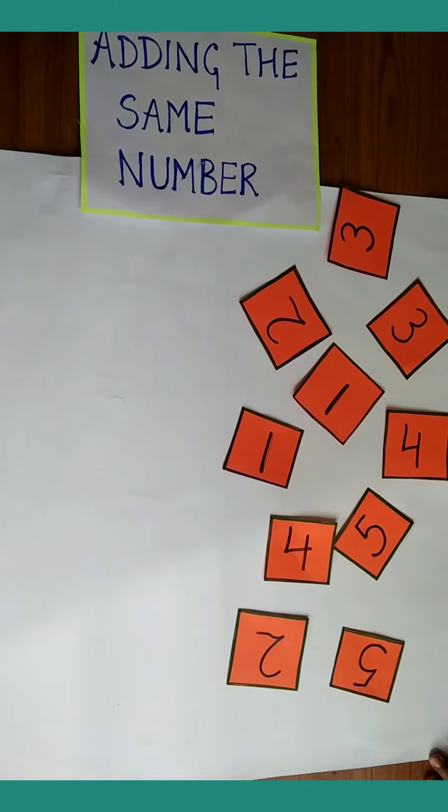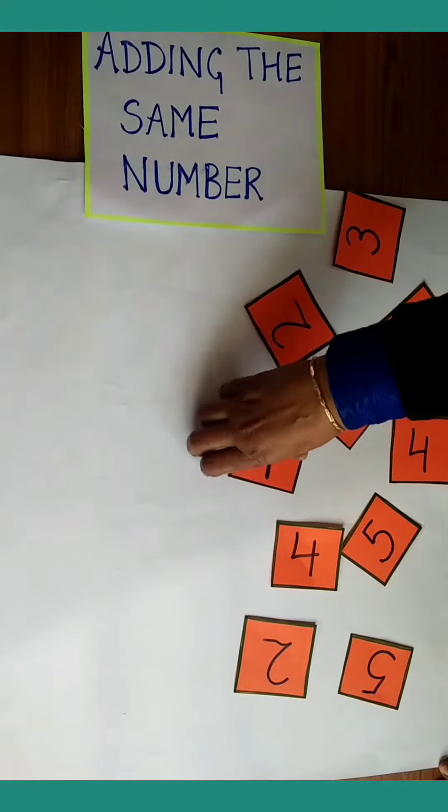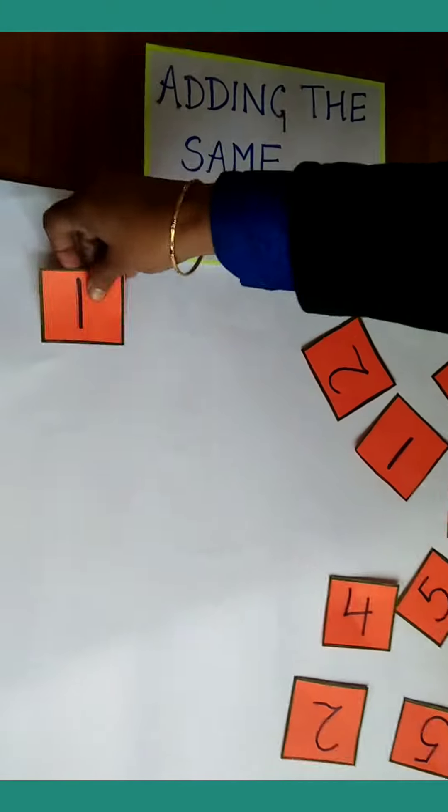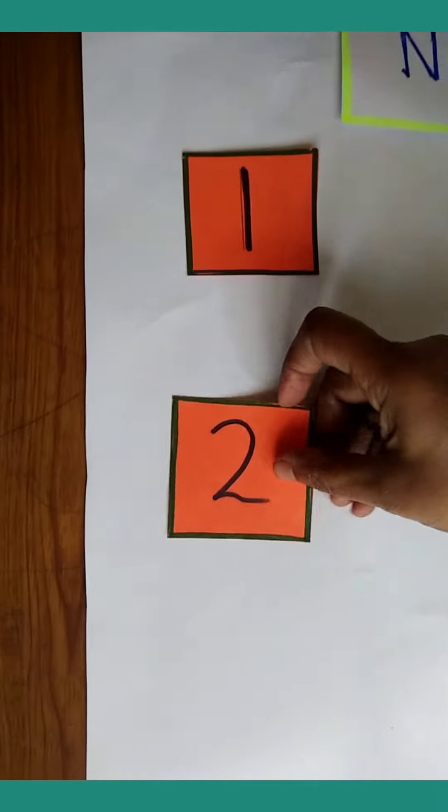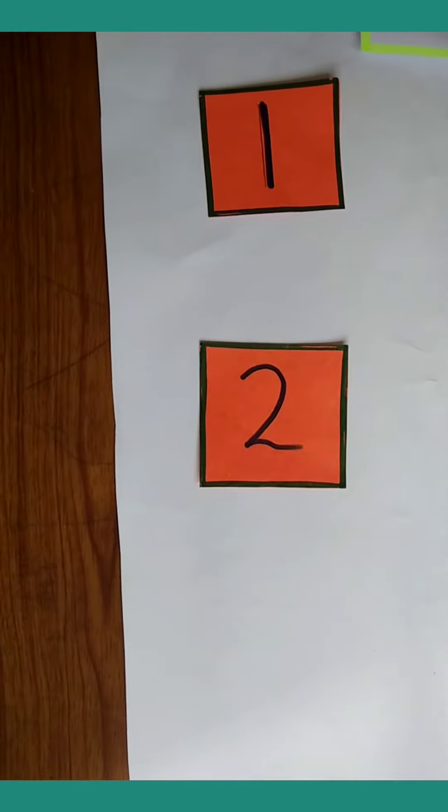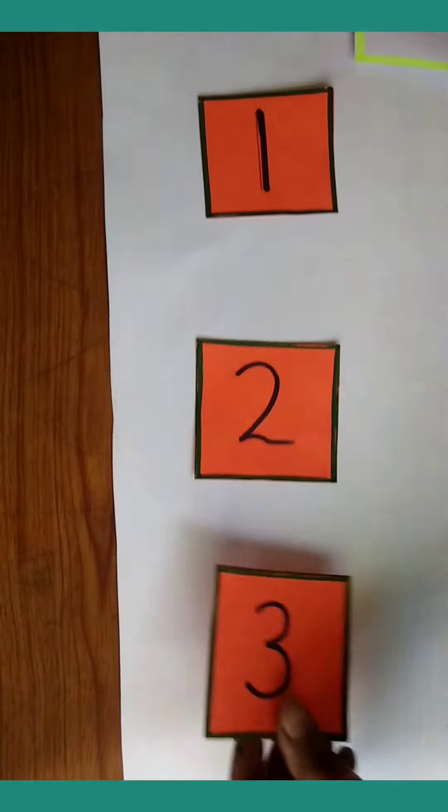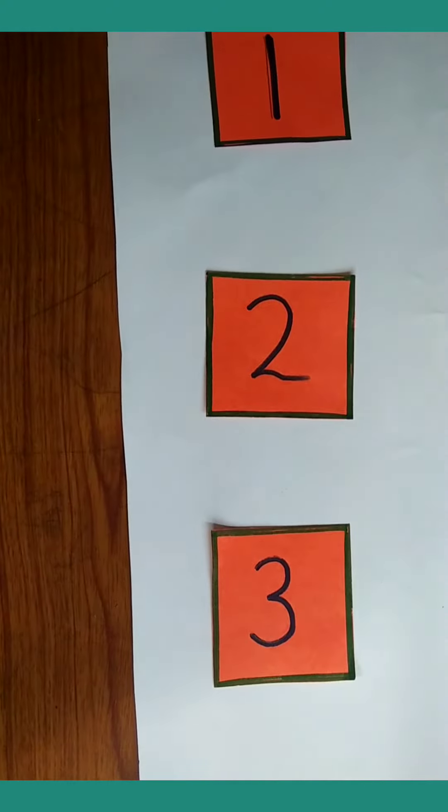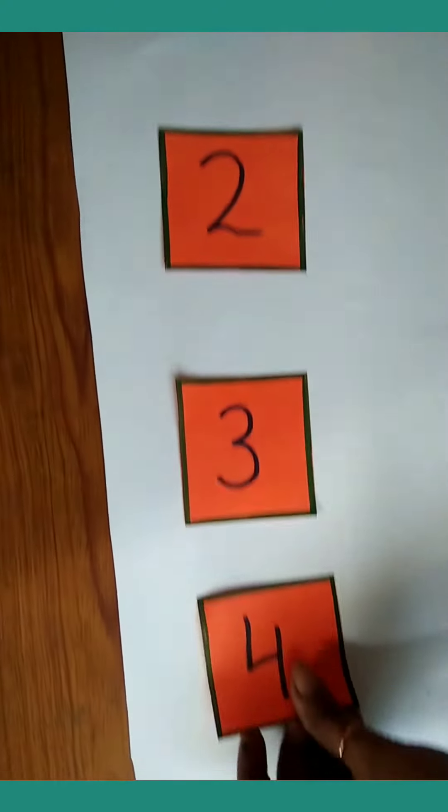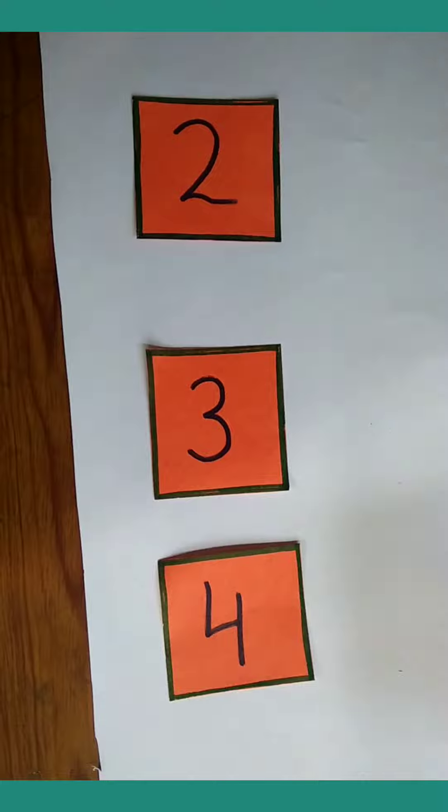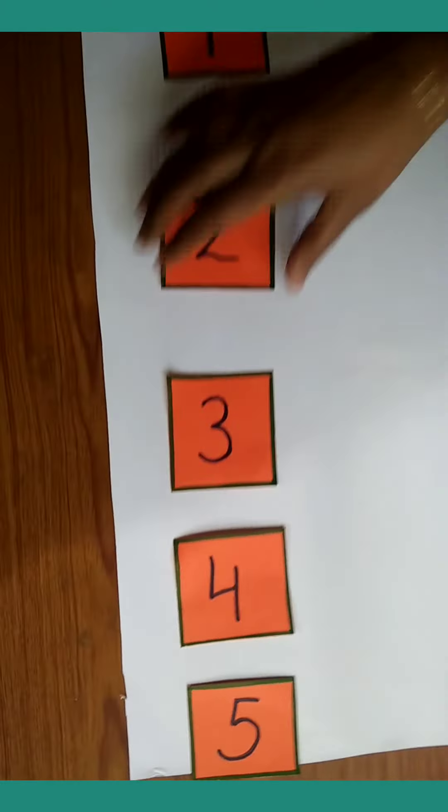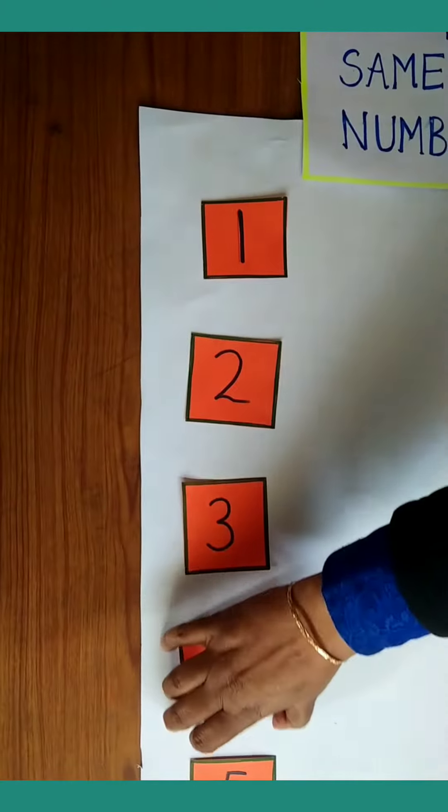First of all, we arrange the numbers 1 to 5. 1, 2, 3, 4, and 5. Now we match the same number.